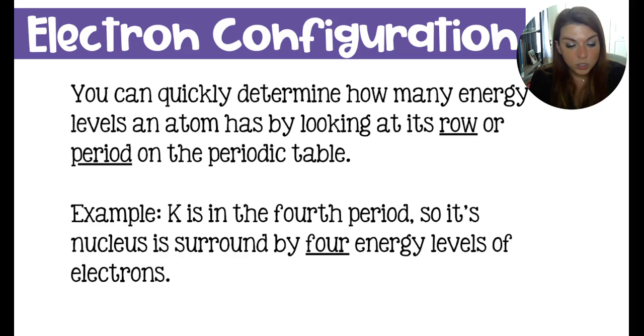In total, you would know that potassium at number 19 would have 19 electrons. And since it's in the fourth period, you know they're organized in four energy levels.